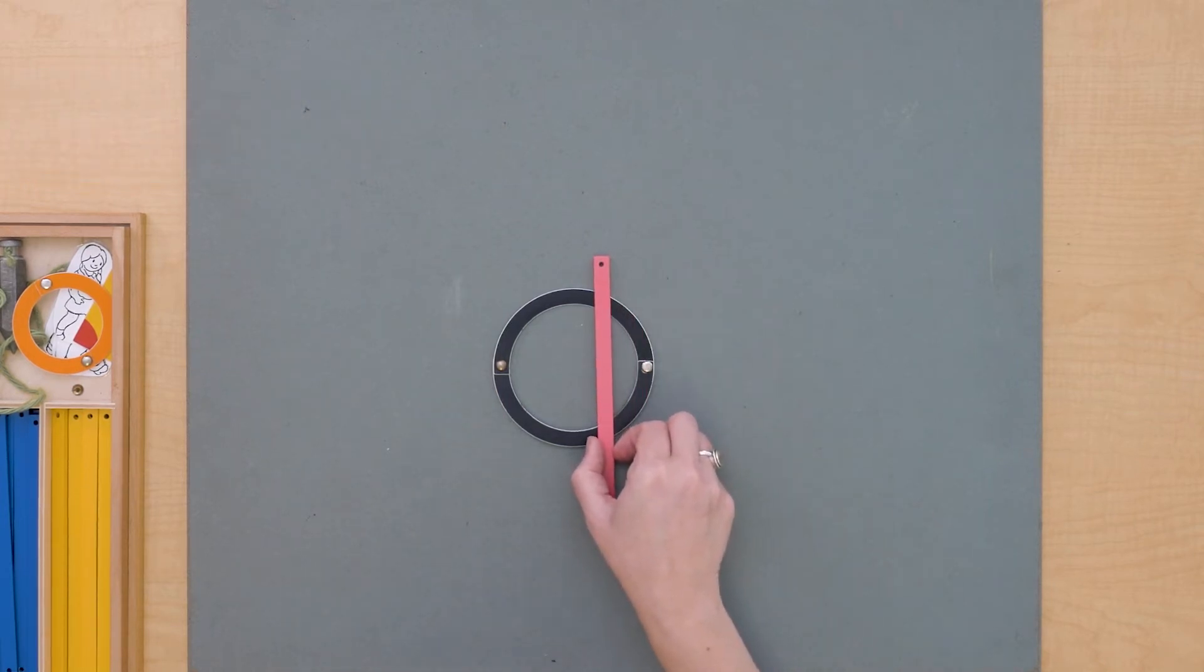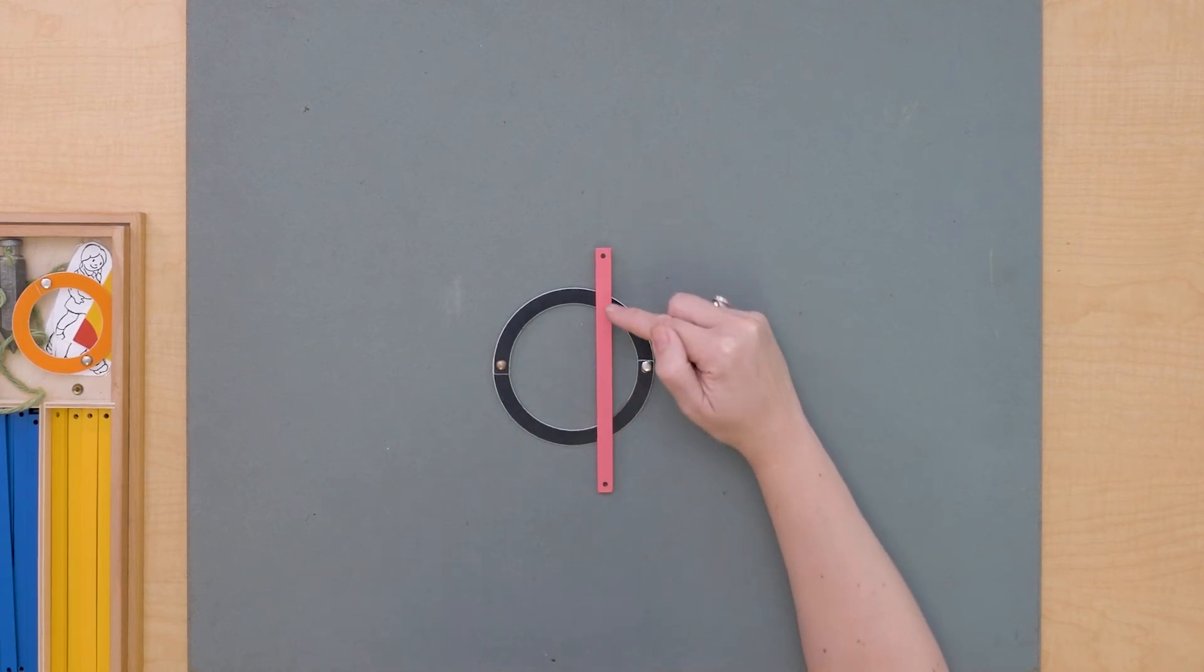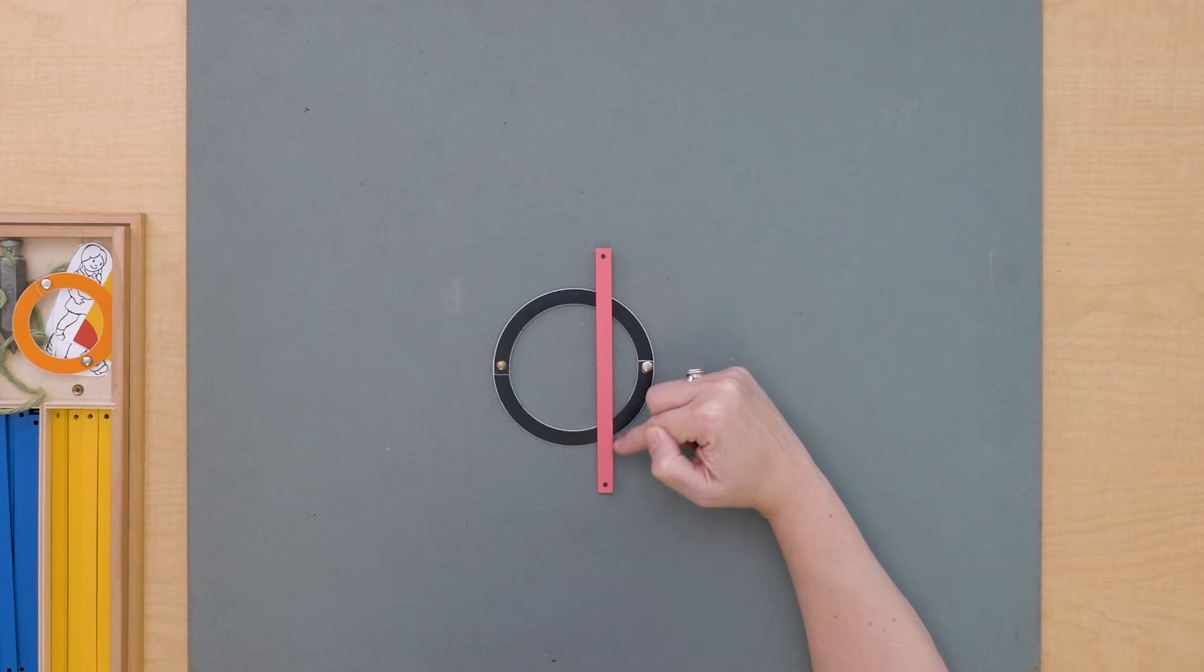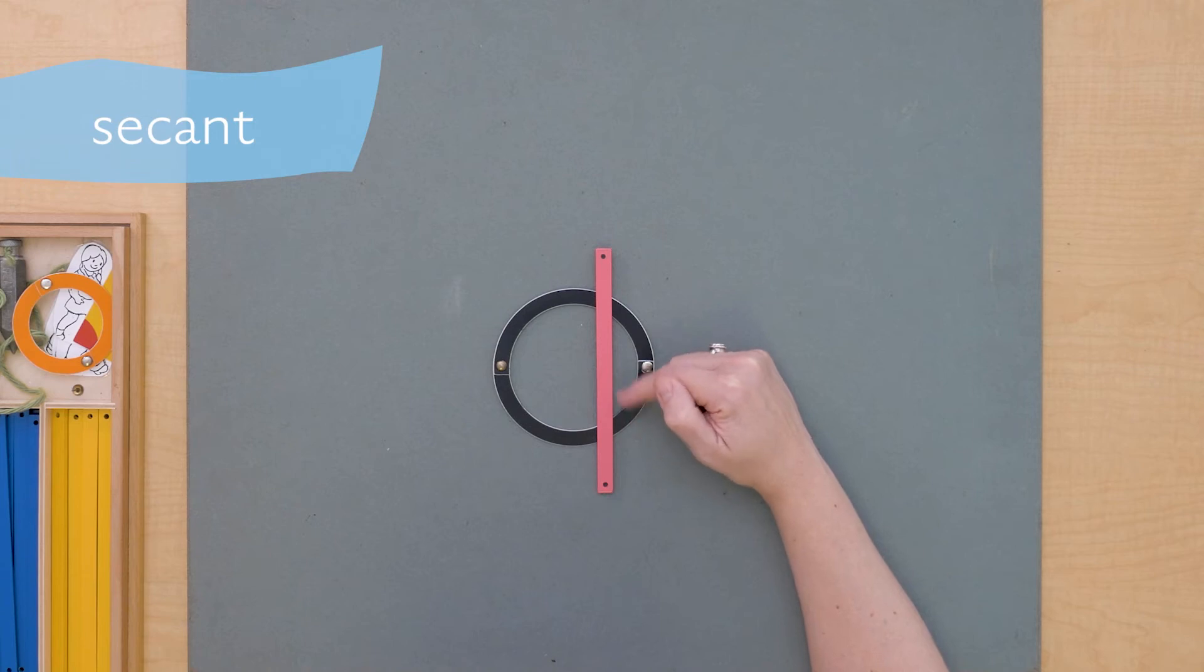Now if I move it here and I have it touching the circumference at two points, we can say that this line is secant to the circle. It is secant.